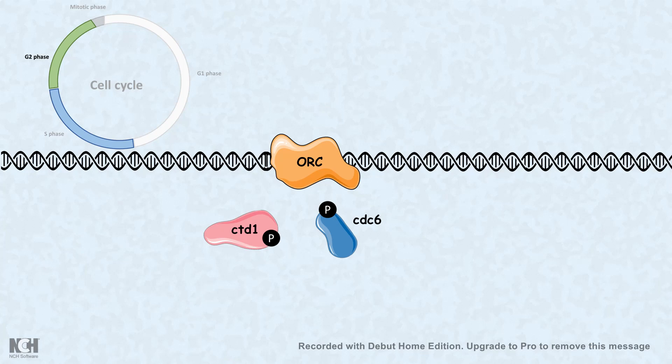So, replication happens only one time in the cell cycle. Now, but it turns out the origin of replication complex is bound all the time. How is this triggered then? It turns out some triggering factor, such as CDC1 and CDC6, are phosphorylated.